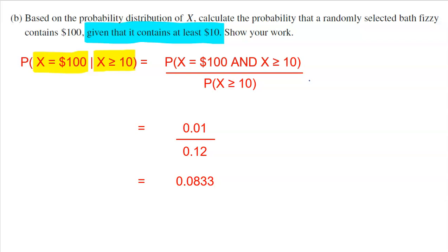Both values, right? Both things. The probability of what we're looking for and the condition. So this is the probability that a bath fizzy contains $100 and is greater than or equal to 10. Now if you think about it, those are not the same thing, but the $100 is greater than or equal to 10. So $100 and greater than or equal to 10 are like one in the same because 100 is greater than or equal to 10. Does that make sense?